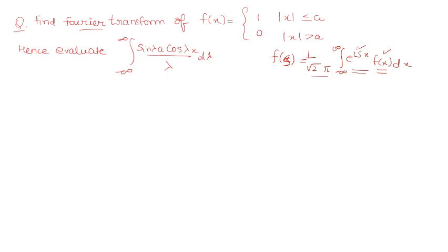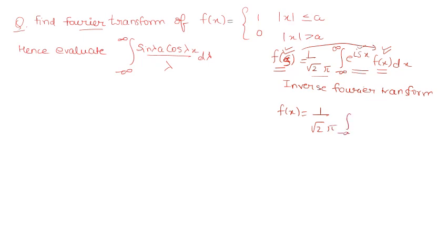This is for Fourier transform. For the inverse Fourier transform: in the forward transform, you are given f(x) and you find F(s). But if you are given F(s) and need to find f(x), that is the inverse Fourier transform. The formula is the same except that instead of iota you have minus iota·sx, and instead of f(x) you have F(s) ds.